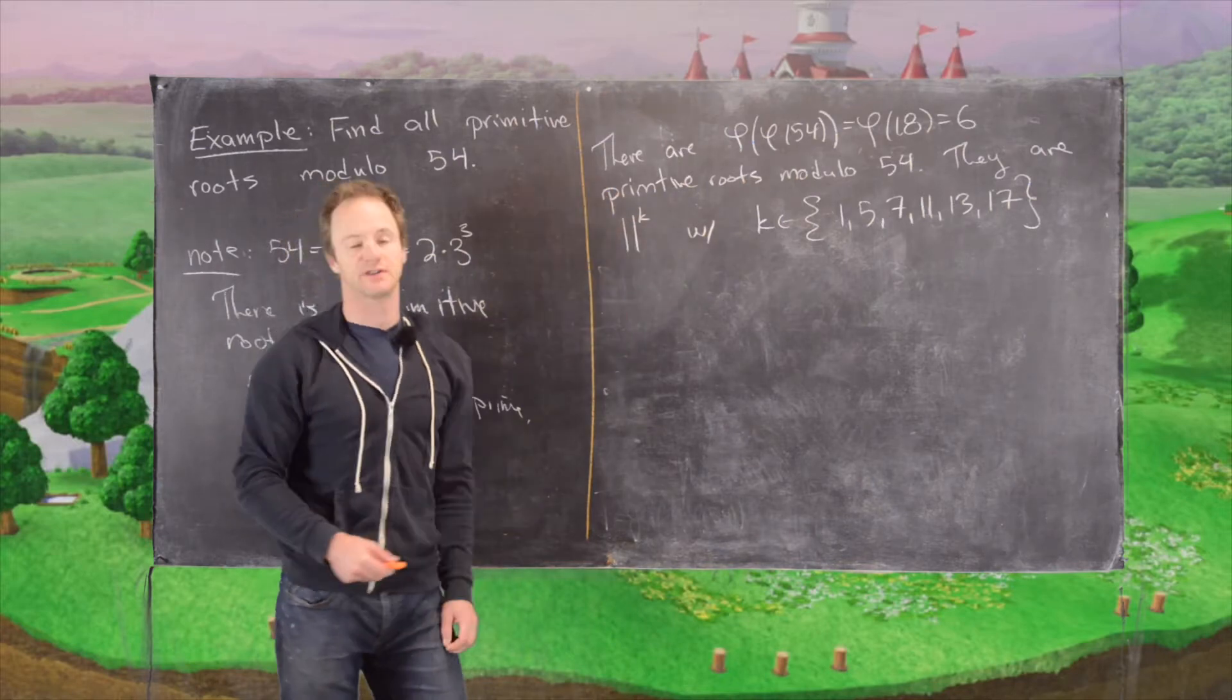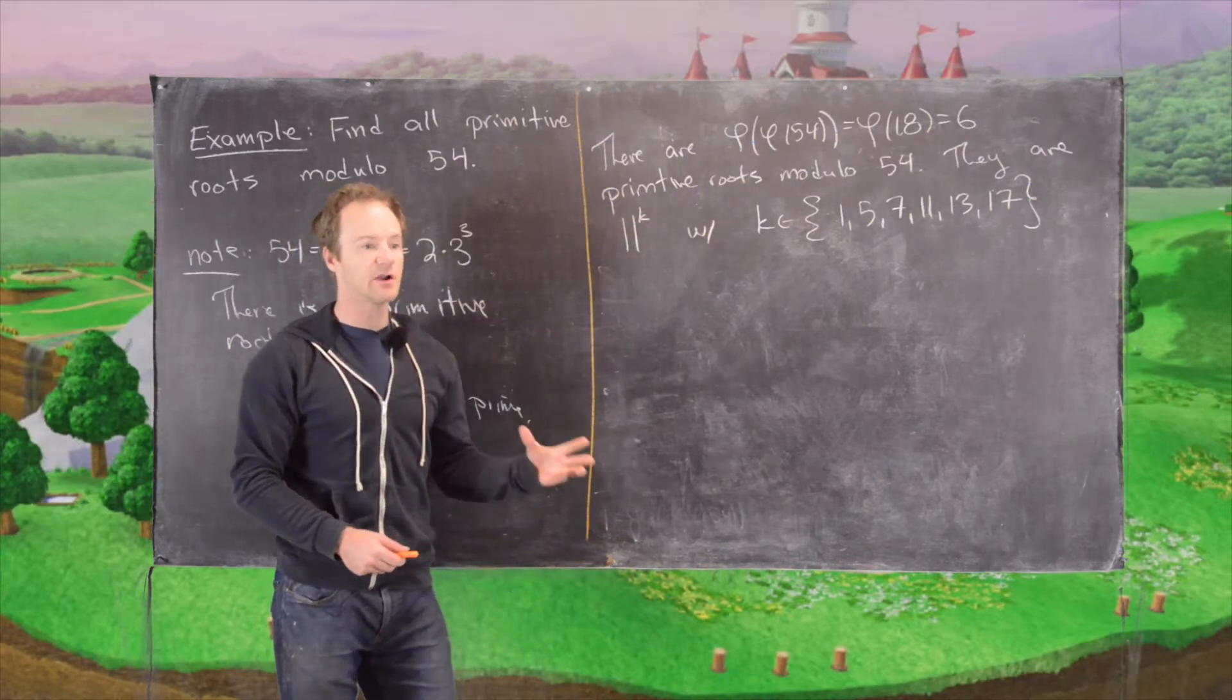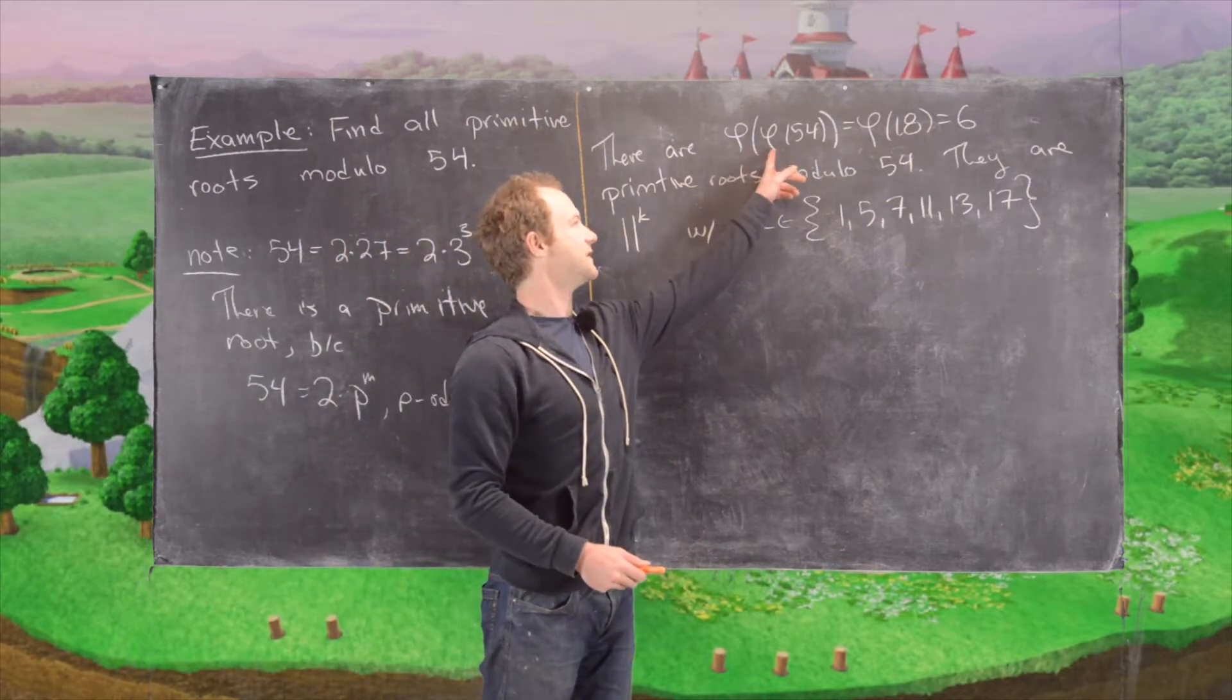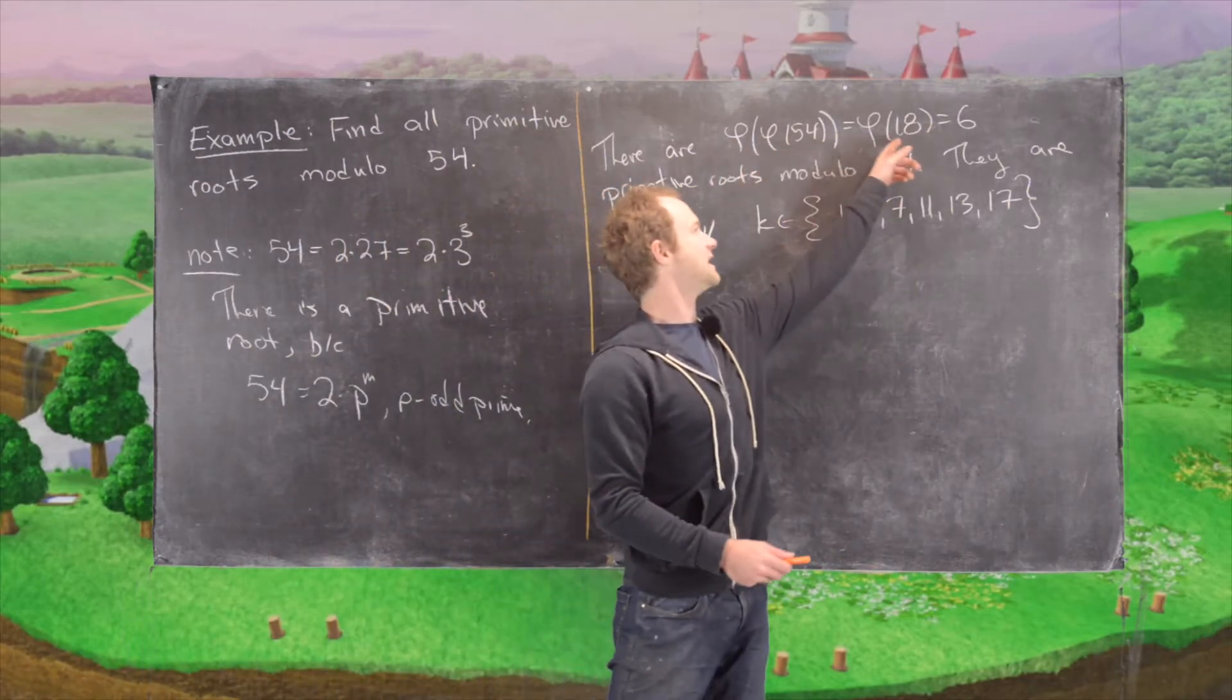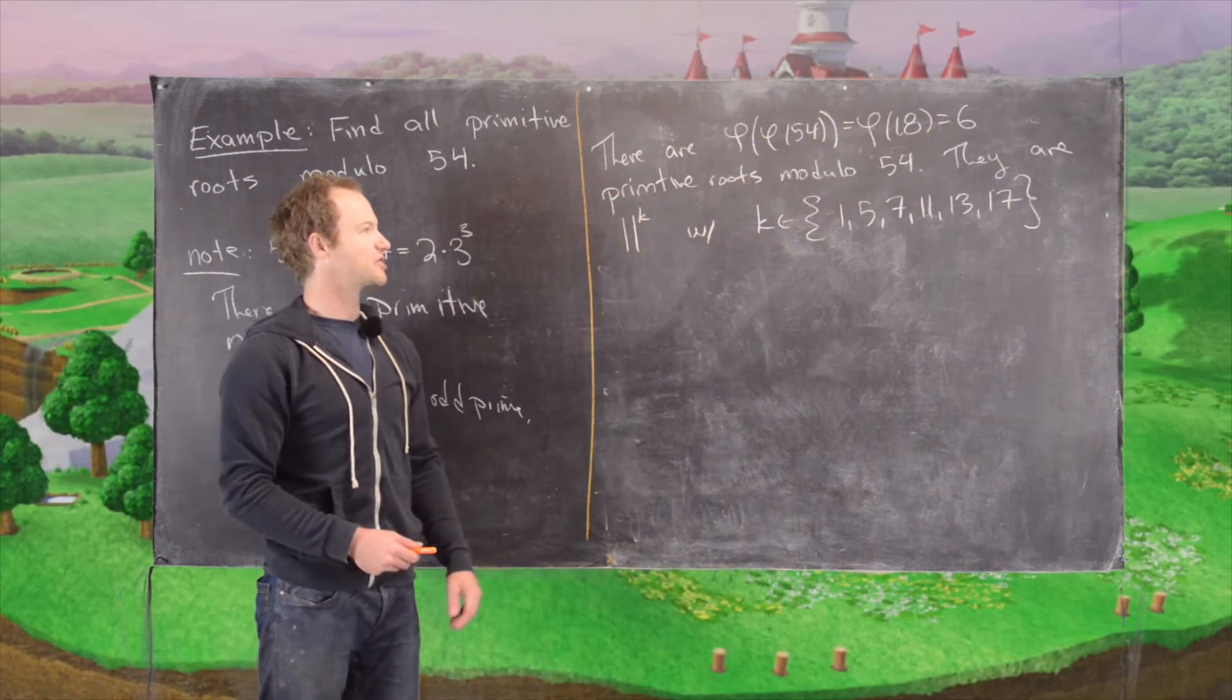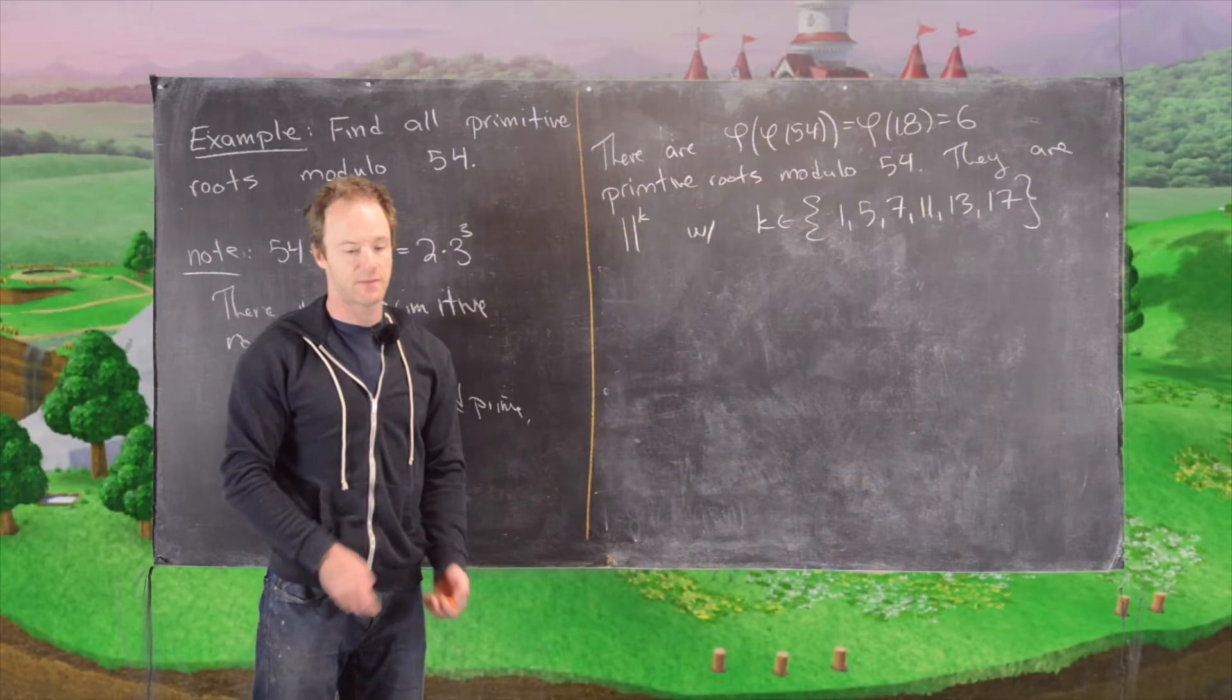And then by a previous result, we know that if there's a single primitive root modulo 54, then there are phi of phi of 54. In other words, phi of 18, which is 6 primitive roots modulo 54. So that, indeed, we'll find all 6 of them.